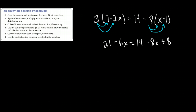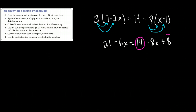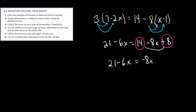Step 3 says collect like terms on each side of the equation if necessary. On the left side, I do not have like terms because I have an integer and a coefficient with a variable. On the right side, I do have like terms — I like to circle them. The 14 is like with the positive 8. The negative 8x just stays where it is, and 14 plus 8 is 22.